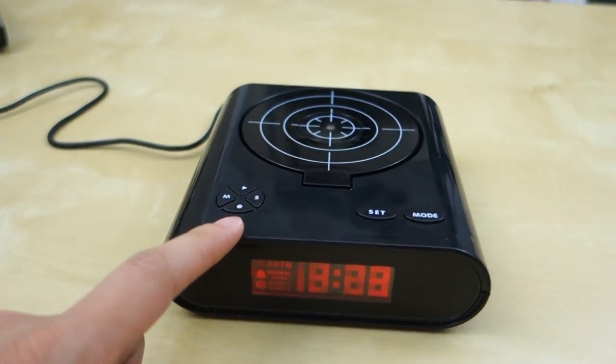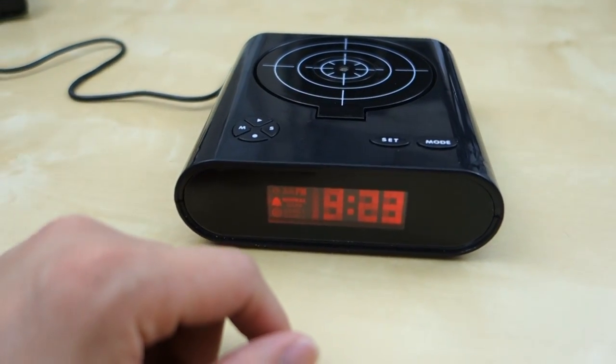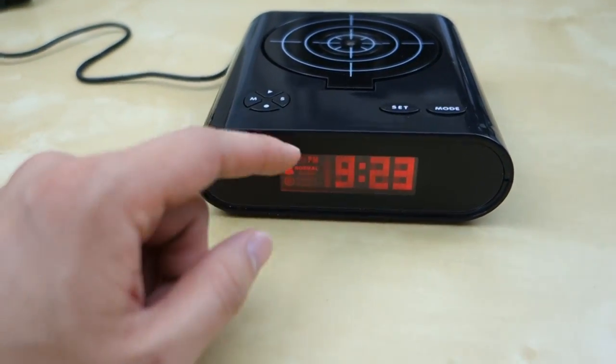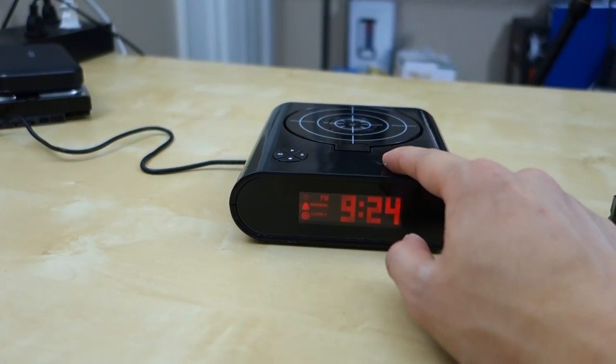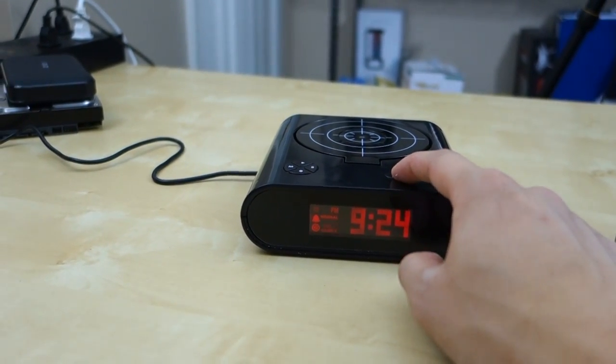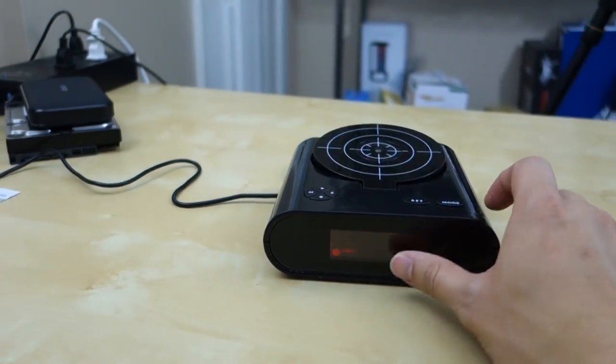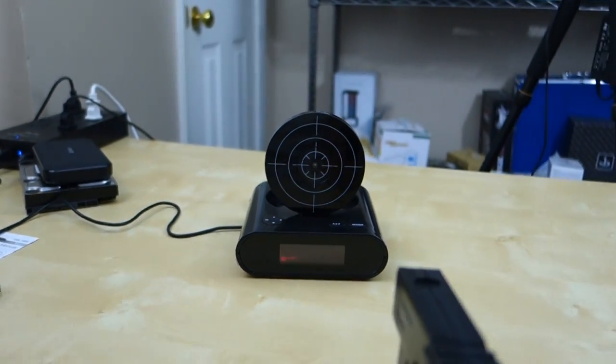So here's the unit as you can see. Pretty simple setup. You can play two different games on here and you can also set an alarm. Let me go ahead and show you the games first because that's the fun part. You can press set here to switch between game one and game two. Let's go ahead and play game one first. This is kind of like testing your reaction time.